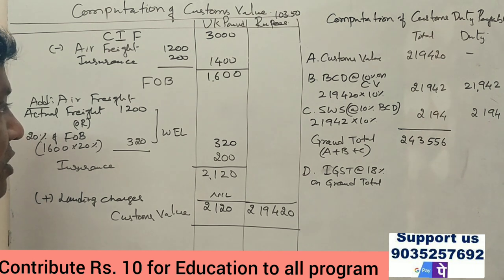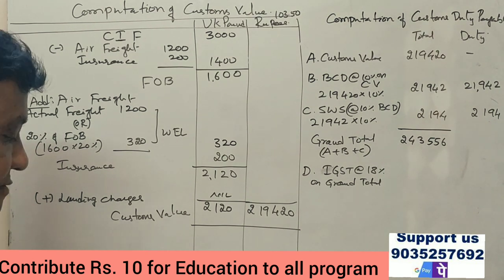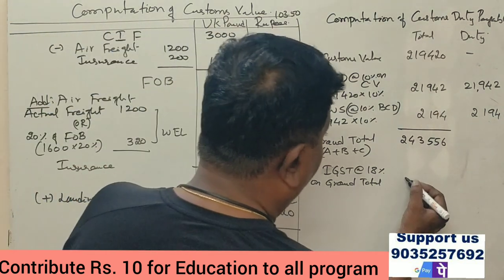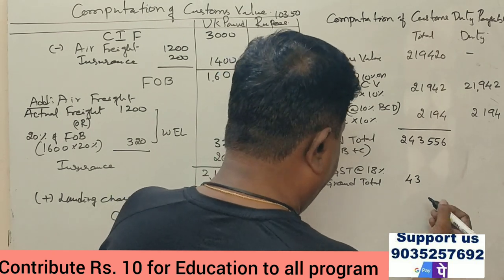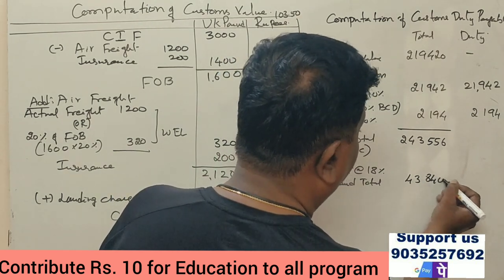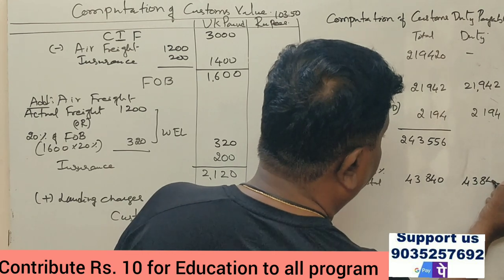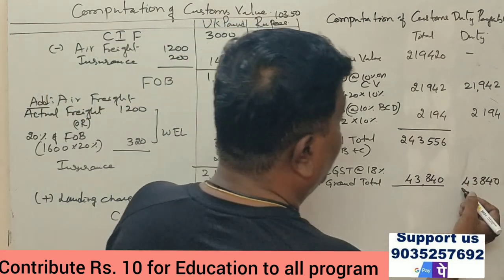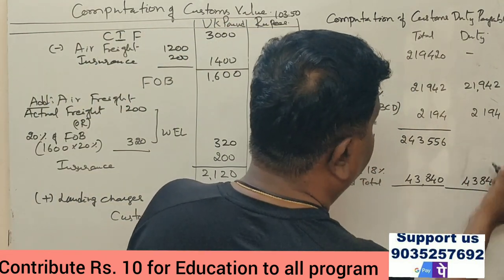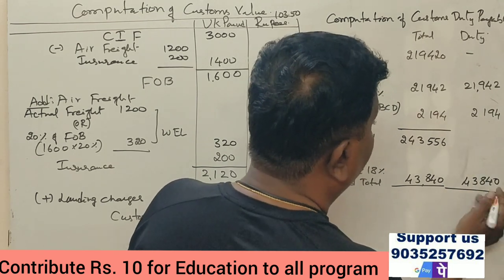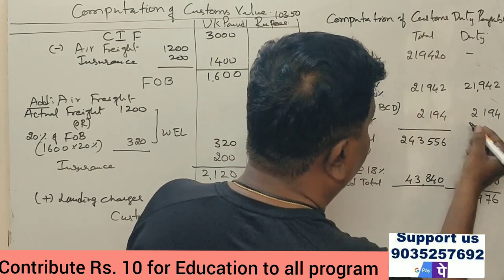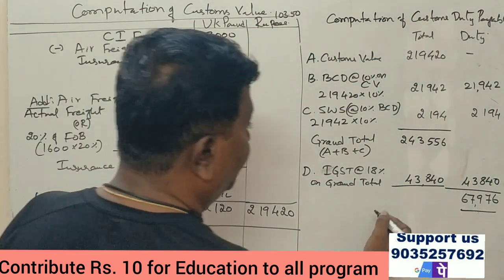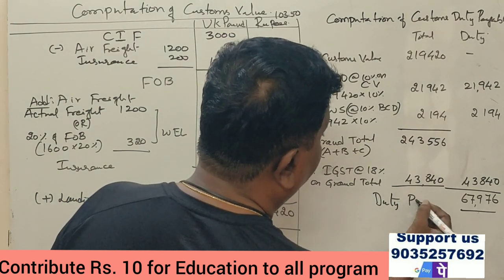IGST at 18% on ₹2,43,556 equals ₹43,840. Therefore, the total customs duty payable is ₹67,976.